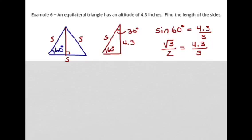So I can cross multiply and get S times the square root of 3 equals 8.6 and that means that S is equal to 8.6 over the square root of 3.